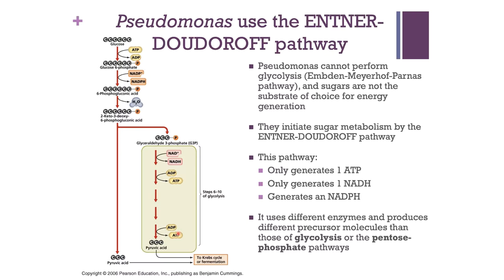The output of the Entner-Doudoroff pathway is: 2 pyruvates, 1 ATP molecule, 1 NADH molecule, and 1 NADPH molecule. You get 2 pyruvic acid, but a very different output of electron carriers compared to glycolysis.